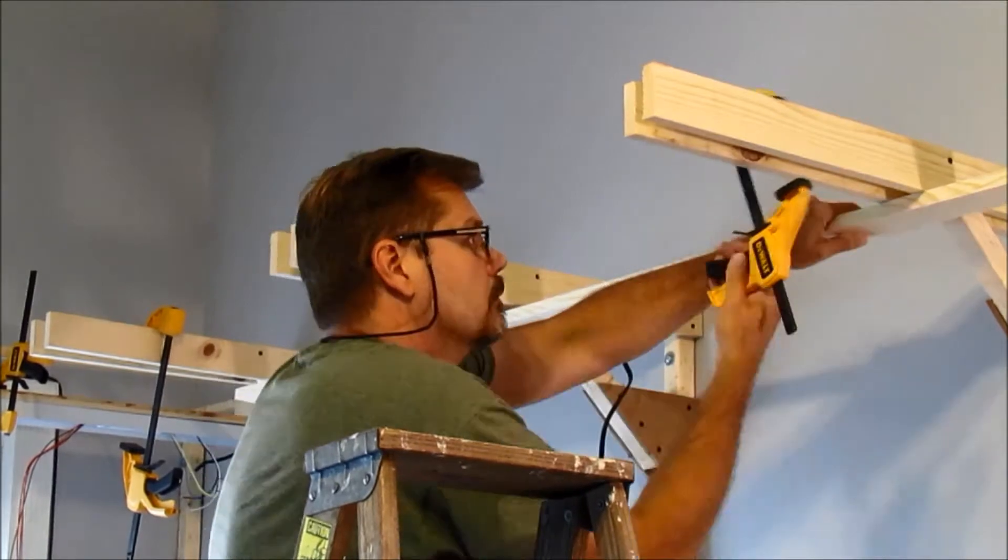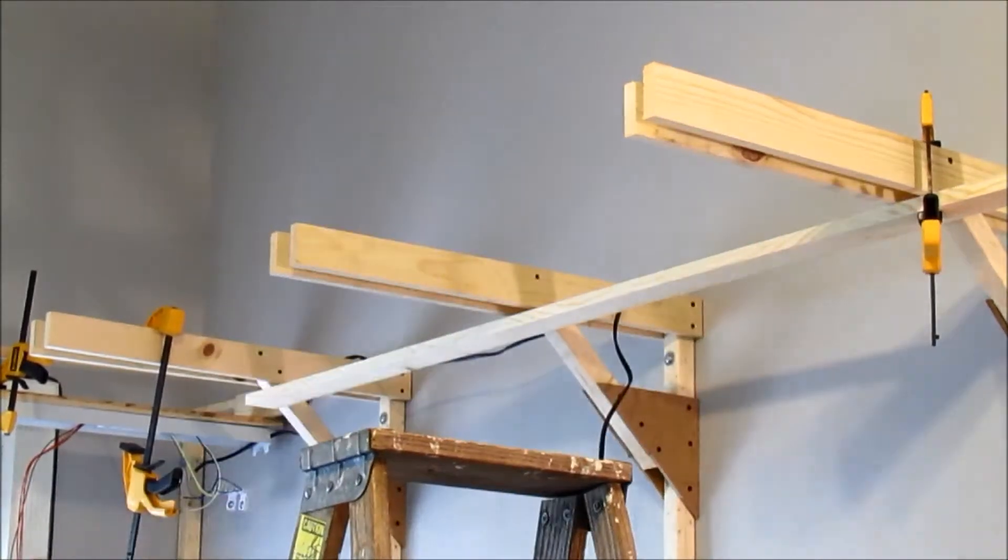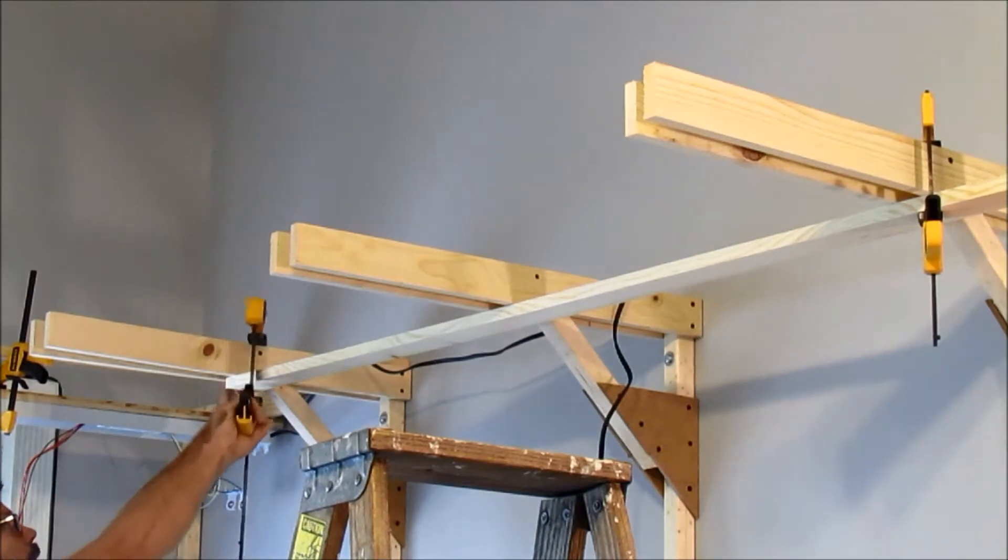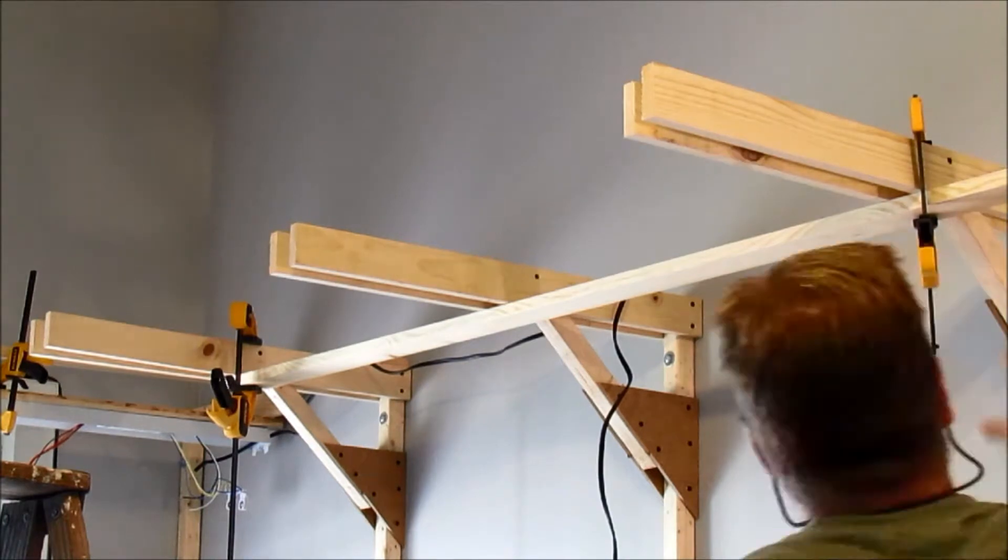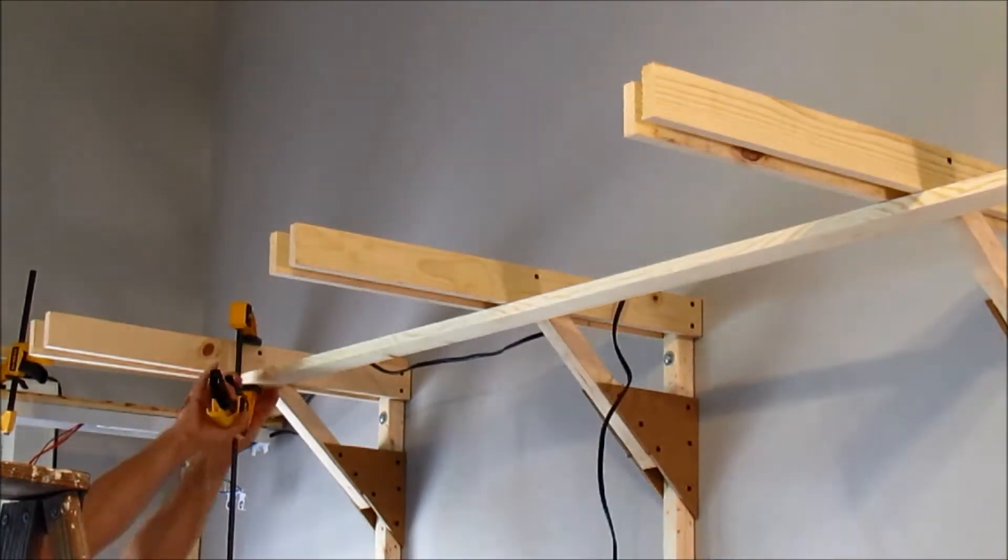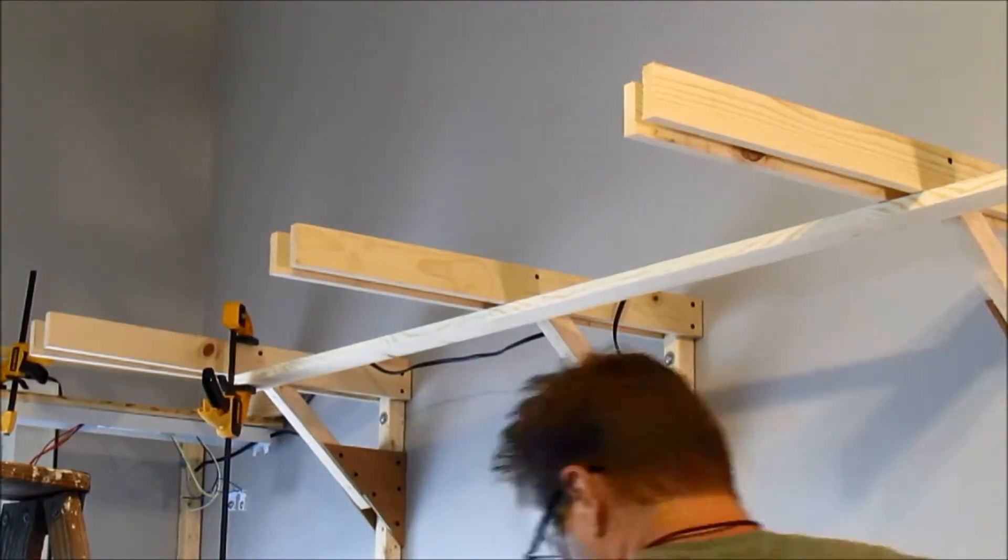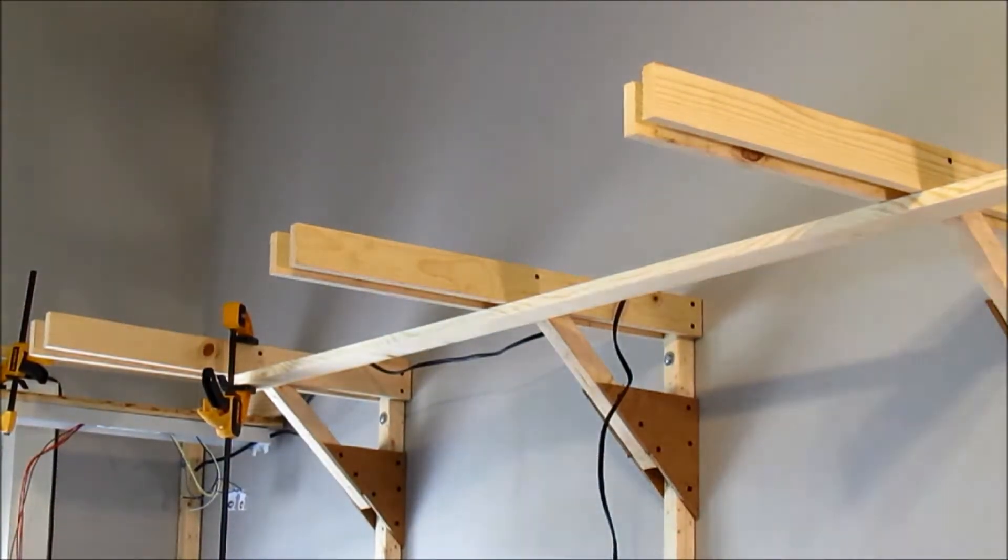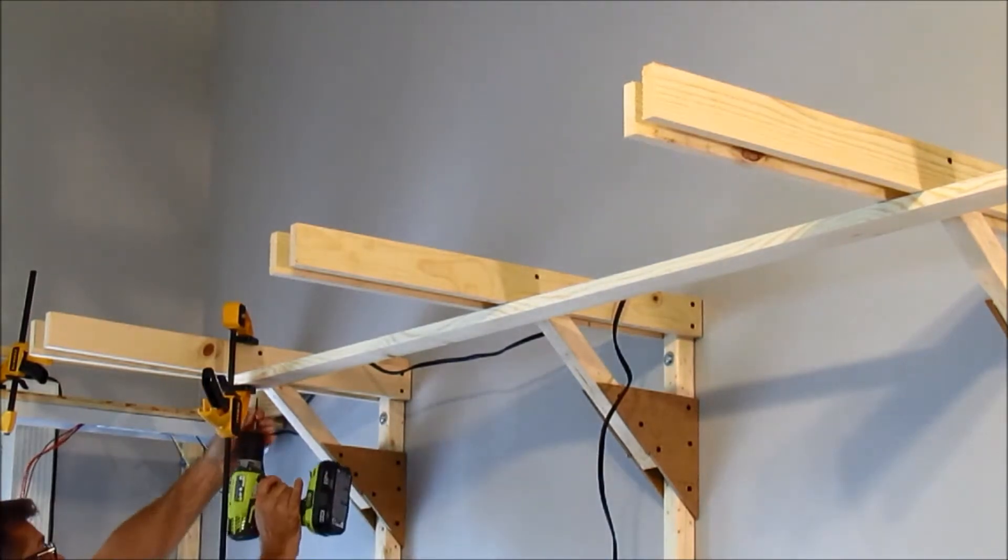So before I attached any lights I went ahead and attached the 1x3s that I would be mounting the lights to. Here I'm actually attaching the middle section. It's a 1x3 that's 8 feet long. It was really nice because it spanned four of my twin bracket arms and it really helped tighten everything up on the layout. It also afforded me the opportunity to move the middle light to the left or to the right.